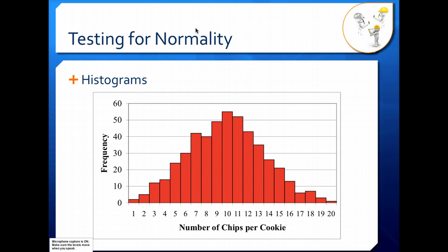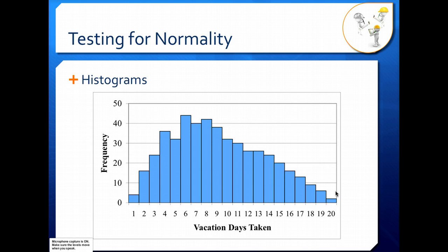Notice that it doesn't have to be a perfect bell curve shape. We have some data here that are a little bit lower that break the shape just slightly. But overall, if we drew a bell curve on top of this histogram, it would line up very well. That's not the case with this histogram — this histogram is not bell shaped. It has a long tail that tapers off as we go up in value of vacation days taken. So this data is not normally distributed and we cannot use analyses like ANOVA on it because it doesn't fulfill our assumption of normality.